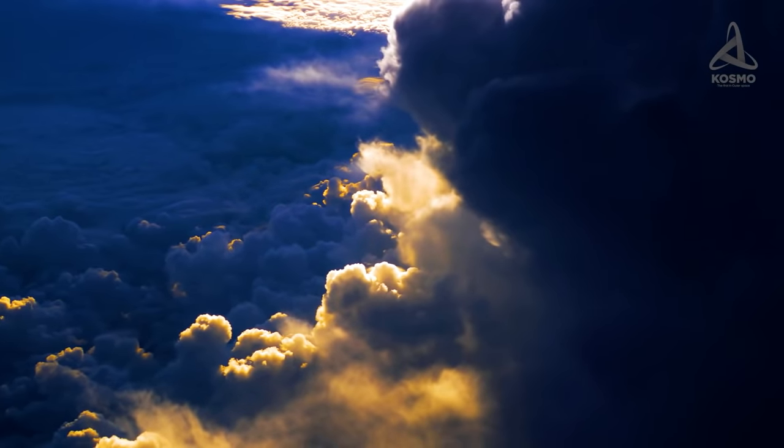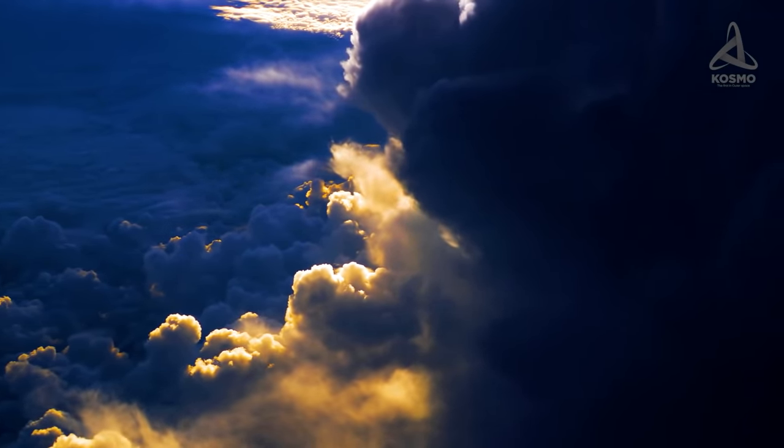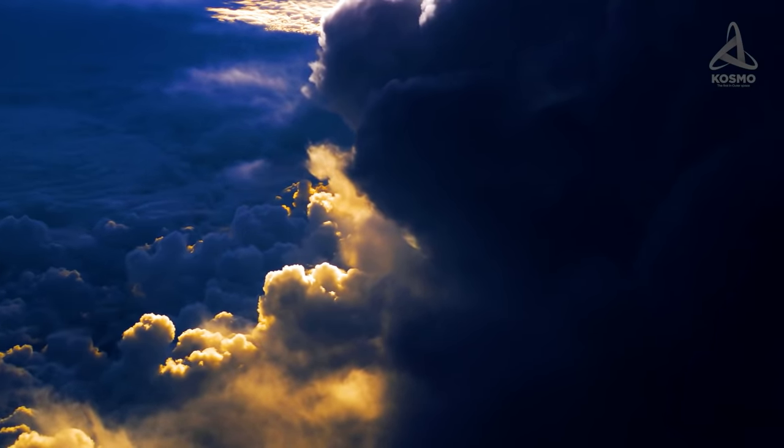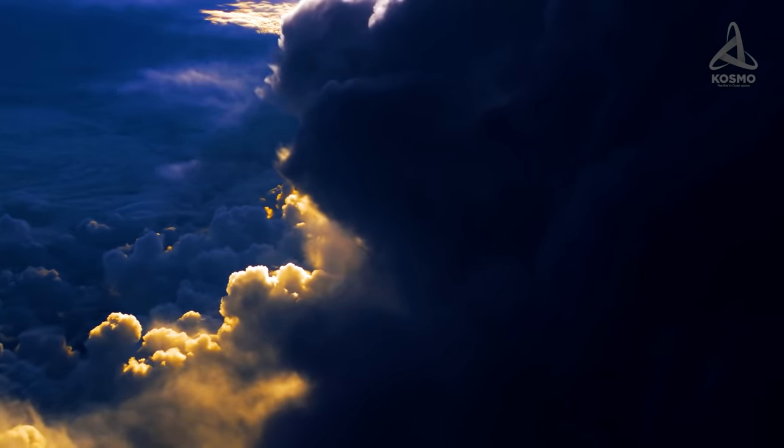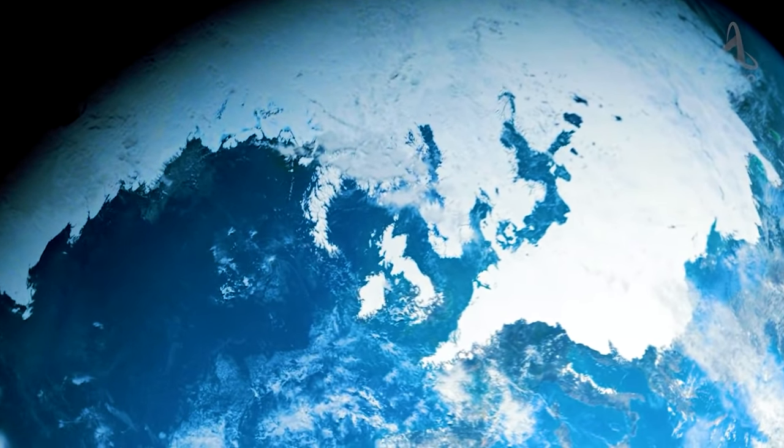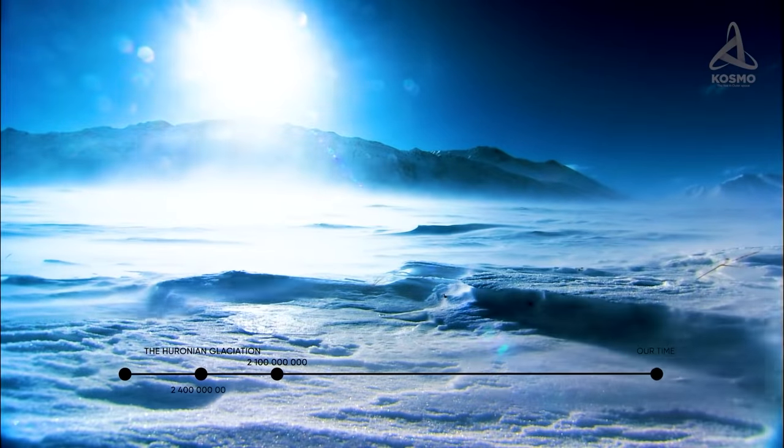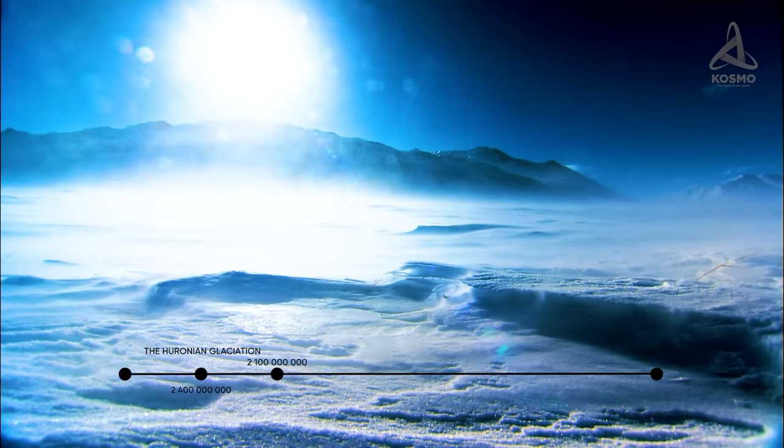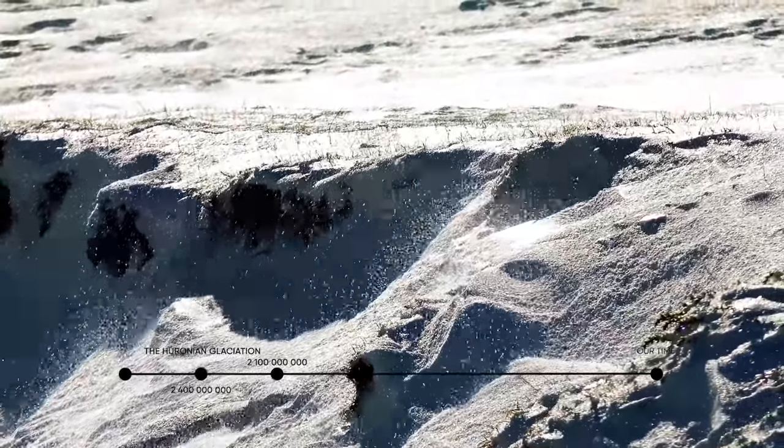The ancient earth's atmosphere was exceptionally rich in methane, a strong greenhouse gas. It robustly oxidizes, producing carbon dioxide and water during the process. With methane's concentration in the atmosphere dropping, the temperature on the planet decreased as well. As a result of this process, there occurred the Huronian glaciation, the most large-scale ice age in the history of the earth, which started 2.4 billion years ago and continued for as long as 300 million years.